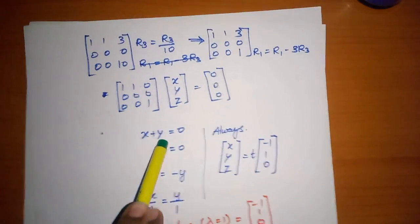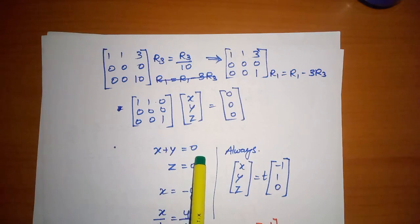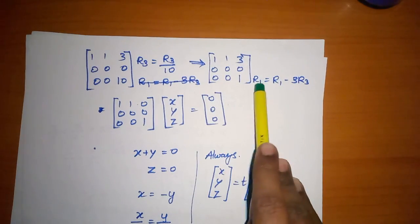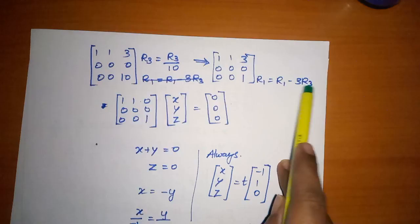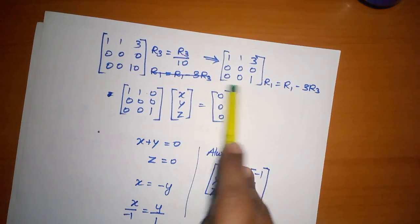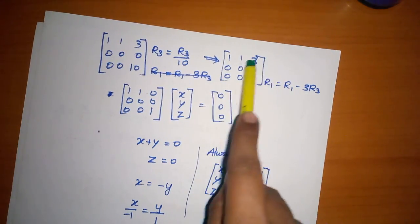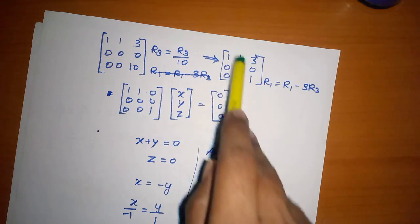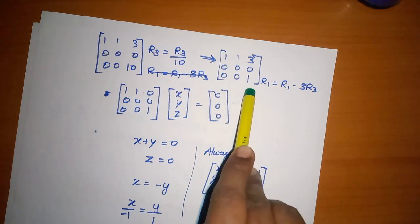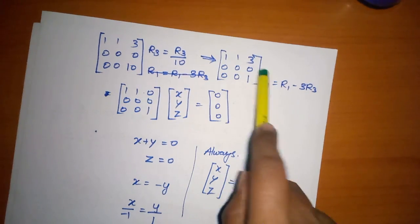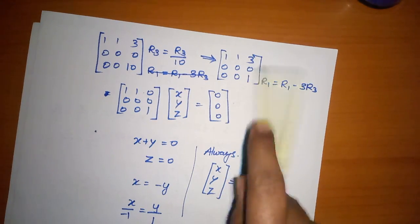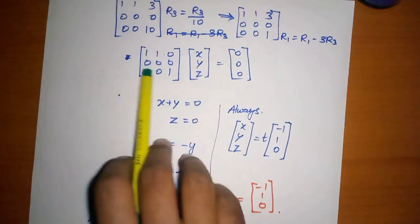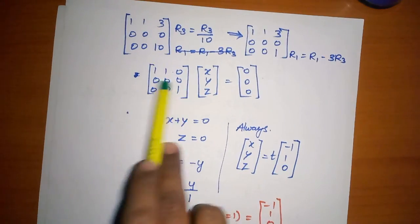We get x plus y equals zero. Apply transformation R1 equals R1 minus 3R3 to eliminate the third element. Third element becomes 3 minus 3 equals zero. The final reduced matrix is [1, 1, 0; 0, 0, 1; 0, 0, 0] — identity-like form.